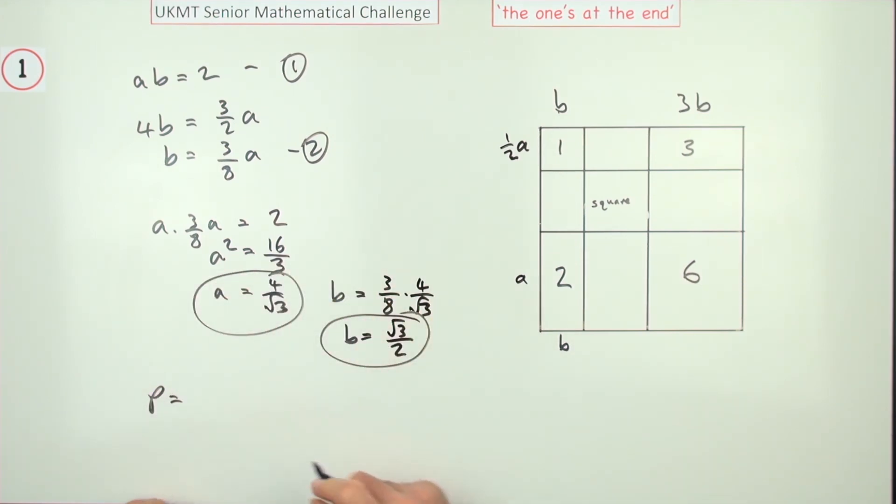If you're looking for the perimeter, it'll just be add them and double it, or double them and add it. So double that is 8 upon root 3. Double that is just root 3, single fraction. So that stays as 8 over root 3. But that will need to get multiplied by another root 3 to make it 3, which means the perimeter is 11 upon root 3.